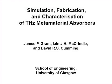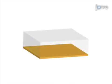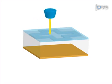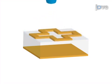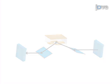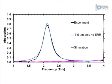The overall goal of this procedure is to simulate, fabricate, and characterize a terahertz metamaterial absorber structure. First, perform simulations to establish the optimum metamaterial absorber design, then fabricate this optimized design. Next, evaluate the experimental performance of the absorber using Fourier transform infrared spectroscopy.